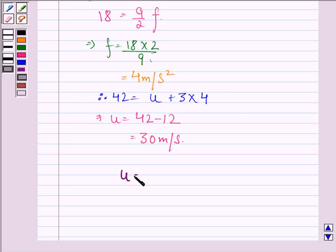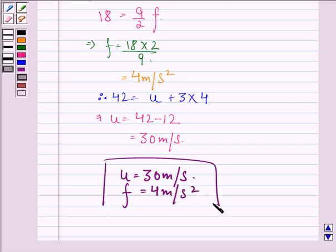So the initial velocity u is 30 meters per second and acceleration f is 4 meters per second squared. This is our answer to this question. I hope you understood the solution and enjoyed the session. Have a good day.